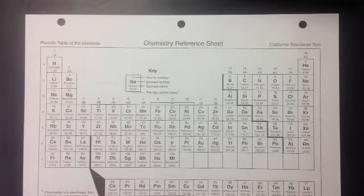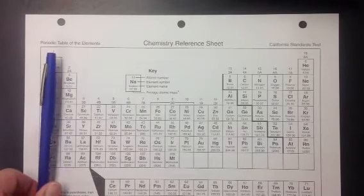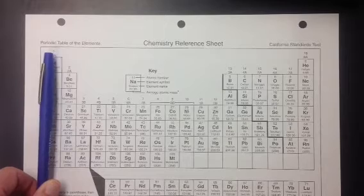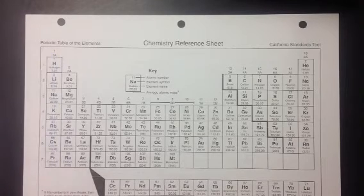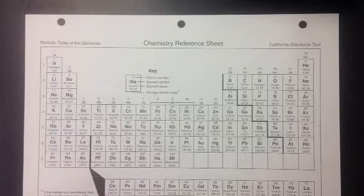If we compare that to the alkali metals that have one valence electron, they want to get rid of that electron. They have no problem getting rid of it because when they get rid of that one valence electron, they will be stable and they will have fulfilled the octet rule.